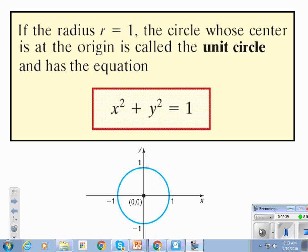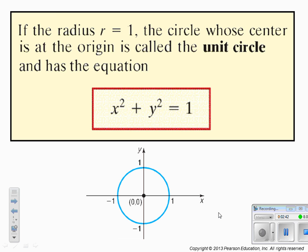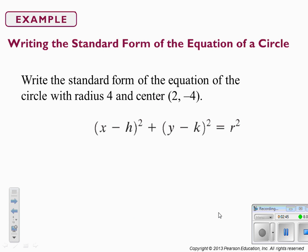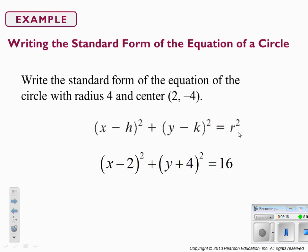Write this example in your notes: we're going to write the standard form of the equation of a circle with a radius of four and a center of (2, negative 4). We're going to take the opposite of 2, which is minus 2, and put it in our equation; the opposite of negative 4, which is plus 4, goes in the equation as well. With a radius of four, it's going to be four squared, so the equation is (x minus 2) squared plus (y plus 4) squared equals four squared equals 16.